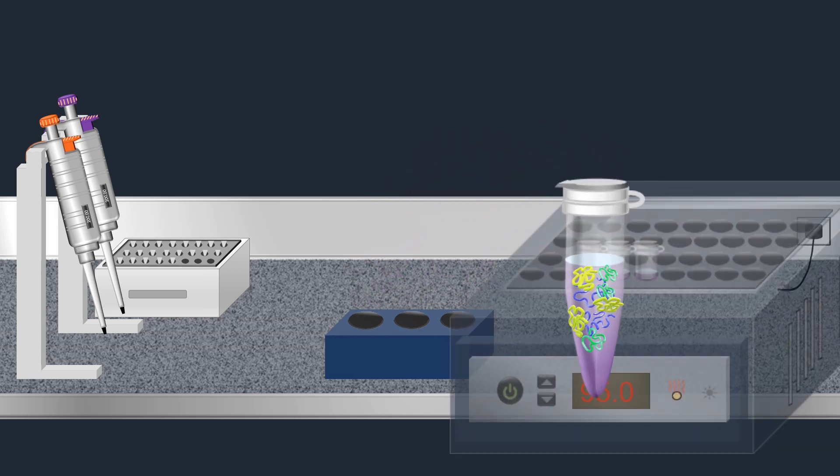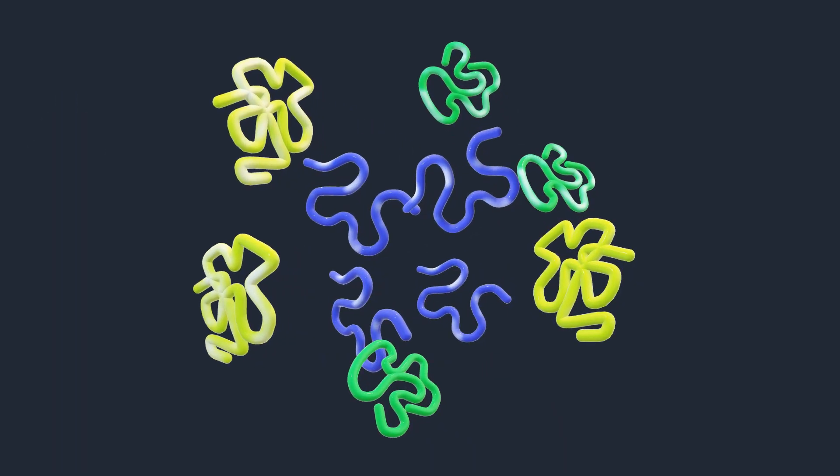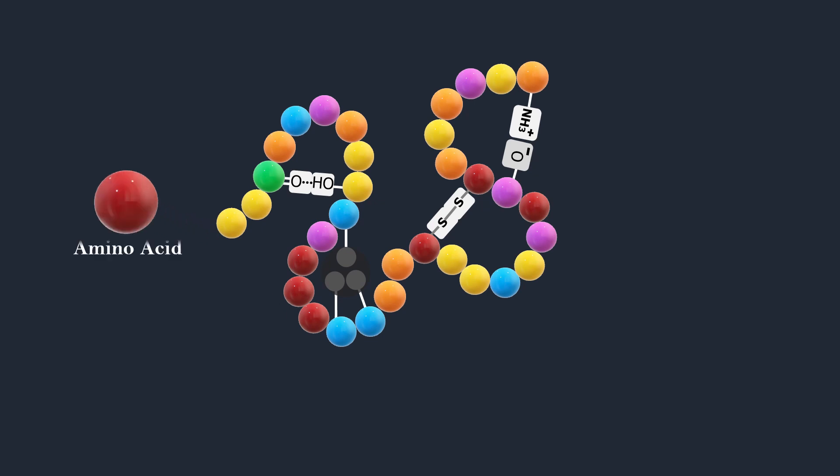Proteins are large biomolecules consisting of one or more long chains of amino acid residues. Amino acids are organic compounds that contain amine and carboxyl functional groups, along with a side chain. Proteins are formed by linking amino acids with peptide bonds.